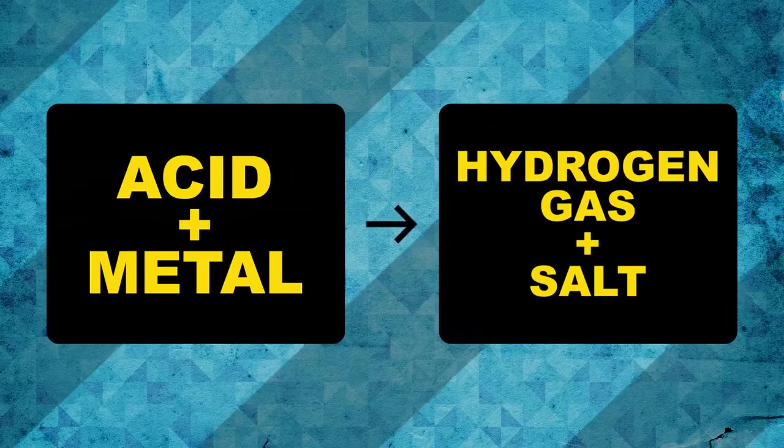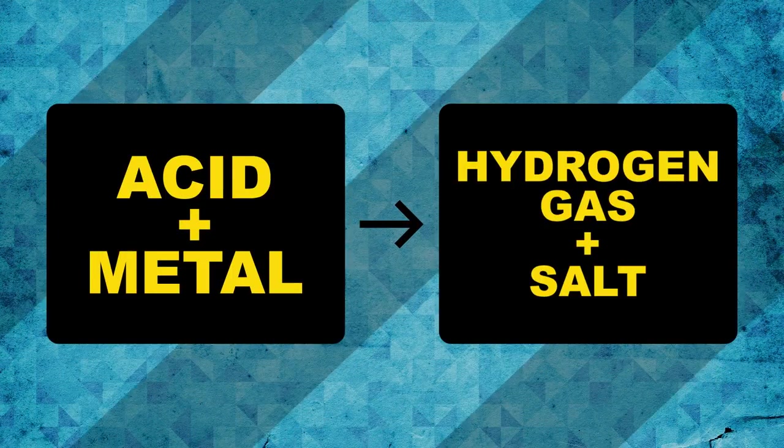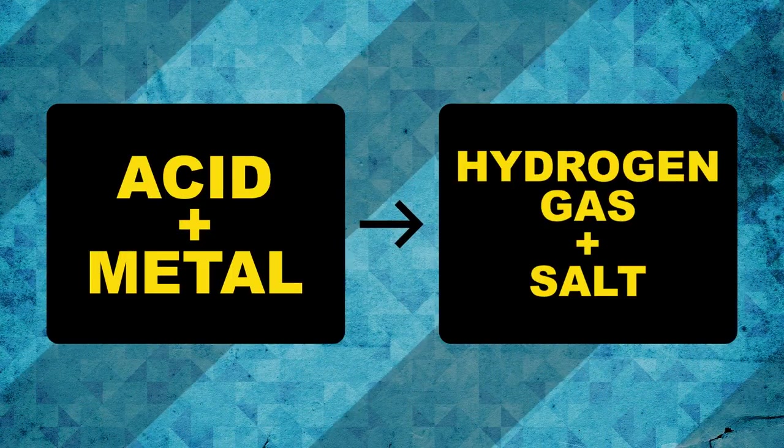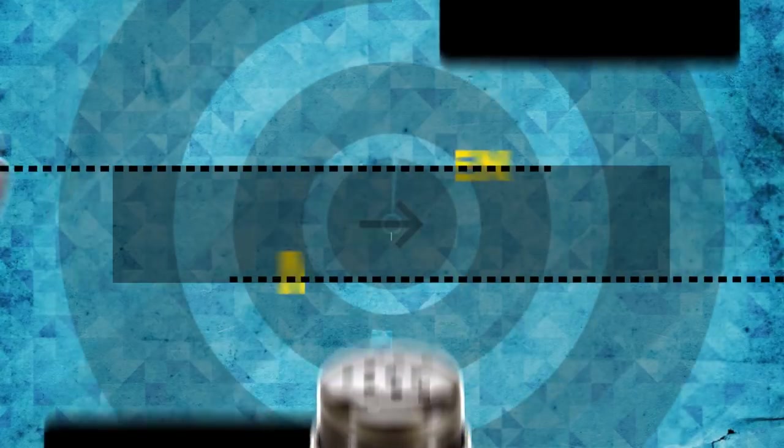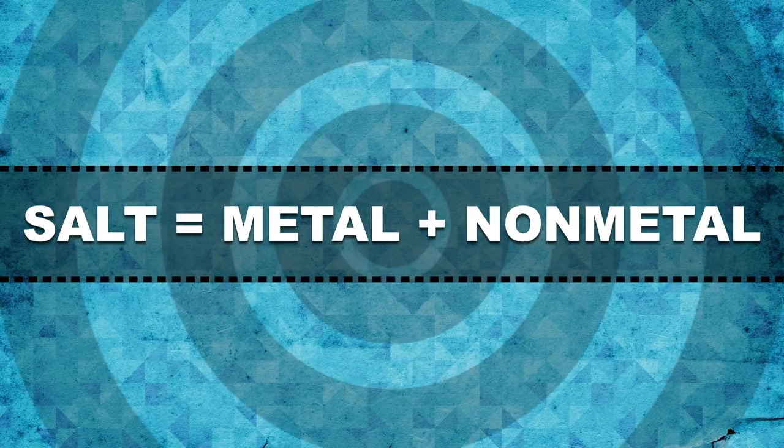and we're left with new products. For example, an acid plus a metal will form hydrogen gas and a salt of the metal and the rest of the acid molecule. And if you're thinking table salt, that's one kind. But there are lots of others. In chemistry, a salt just means a metal plus a nonmetal.